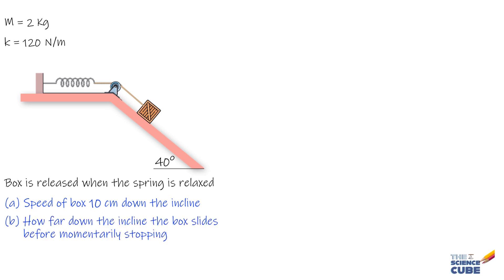Part B is: how far down the incline from its point of release does the box slide before momentarily stopping? And part C: what are the magnitude and direction of the box's acceleration at the instant the box momentarily stops?